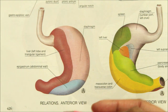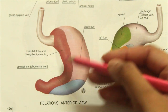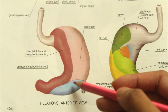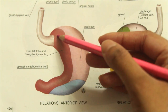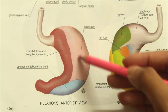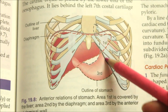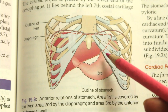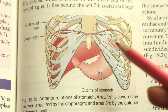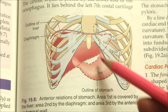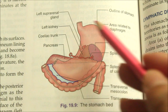The anterior surface of the stomach is related to the liver, the diaphragm, the transverse colon, and the anterior abdominal wall. The space between the costal margin and the lower edge of the left lung overlying the stomach is called Traube's space. Normally on percussion there is a resonant note over this space.